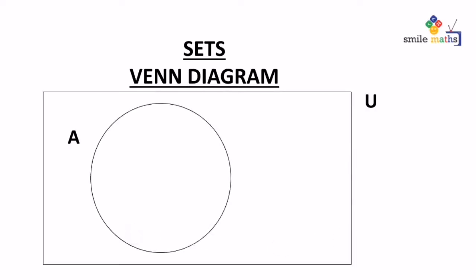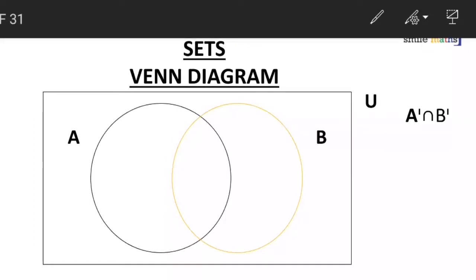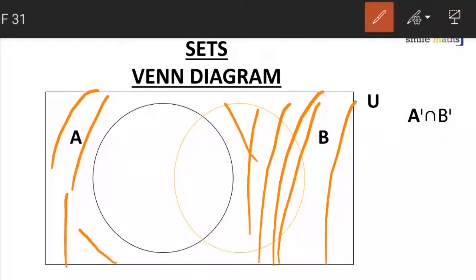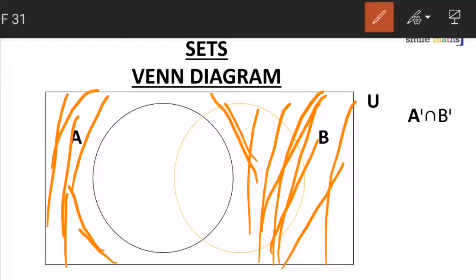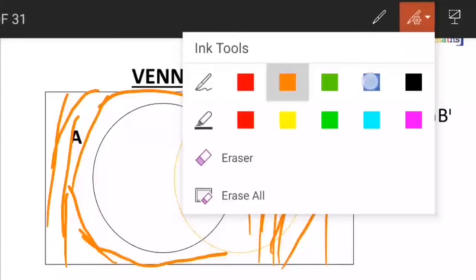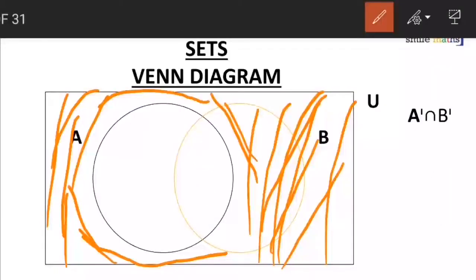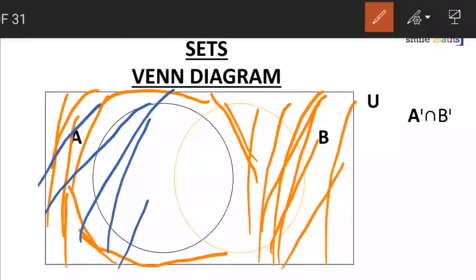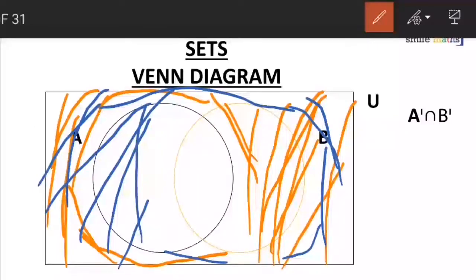We have a new Venn diagram with set U, set A, and set B. Now let's look at A complement intersection B complement. Drawing that: A complement is all parts outside the black circle, which is set A. Then we also go for B complement, which is outside the yellow circle. We make sure the blue lines don't enter the yellow circle.